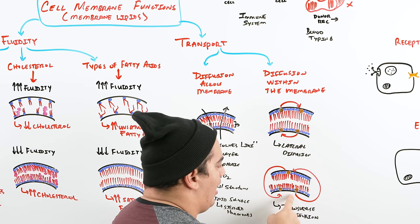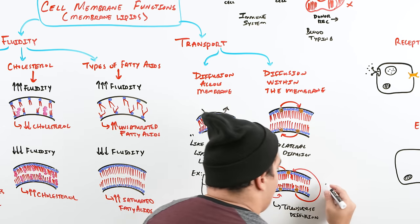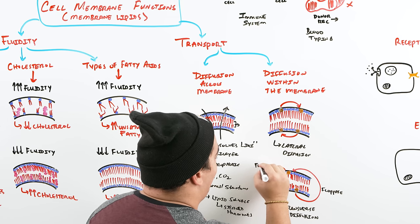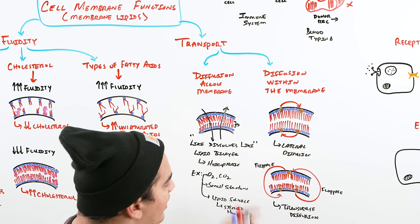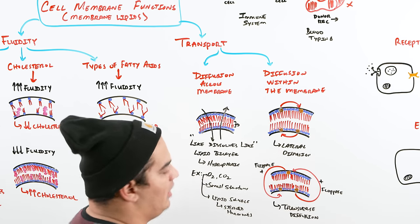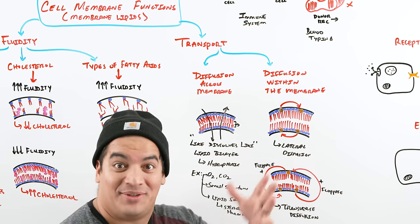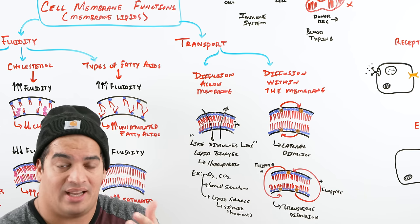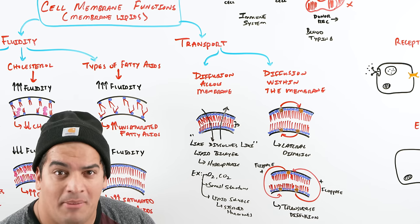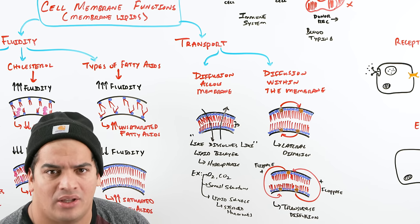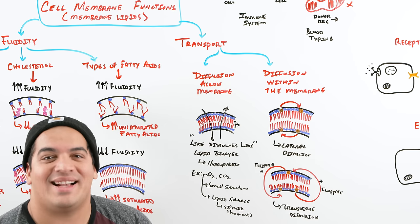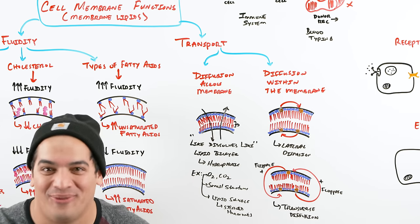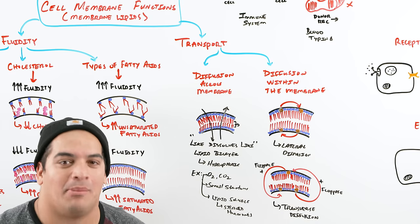So the key functions of membrane lipids are: fluidity — influenced by temperature, cholesterol, and types of fatty acids; transport across the membrane via simple diffusion for small, non-polar, lipid-soluble molecules; and lateral and transverse diffusion of phospholipids within the membrane itself, facilitated by flippase and floppase enzymes.